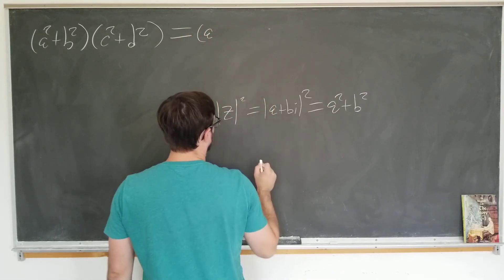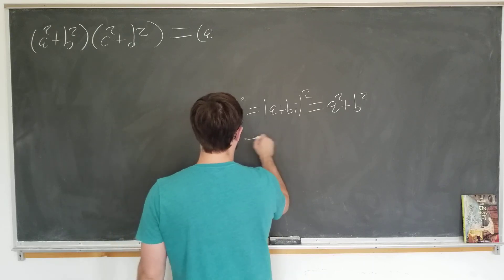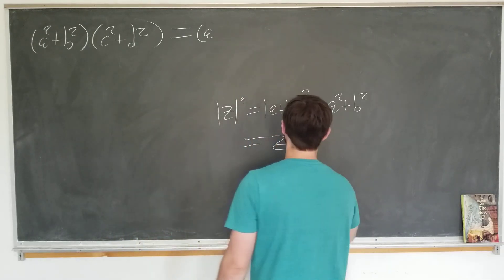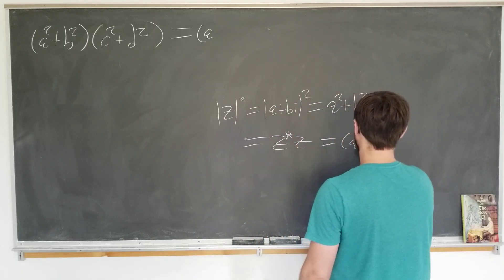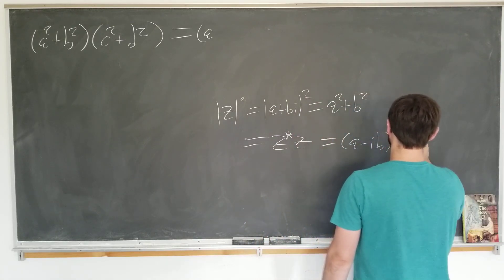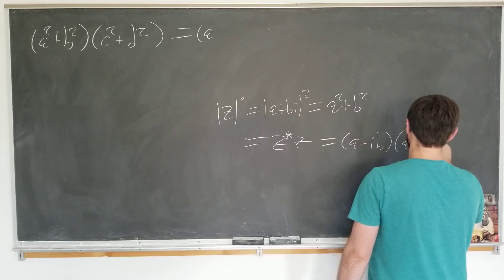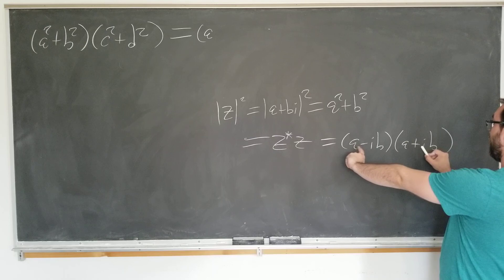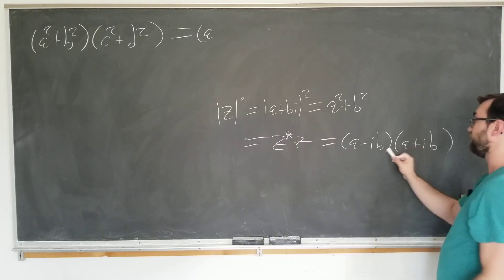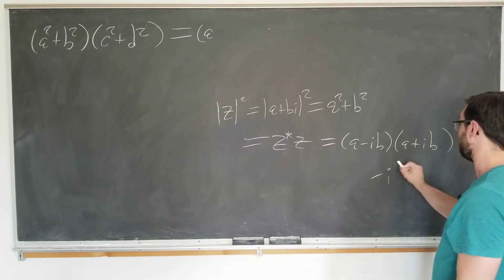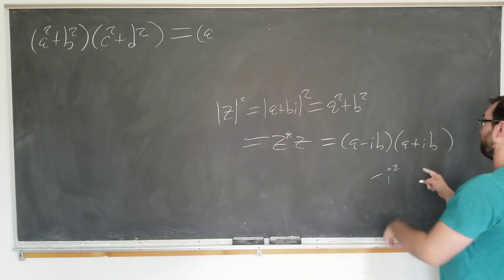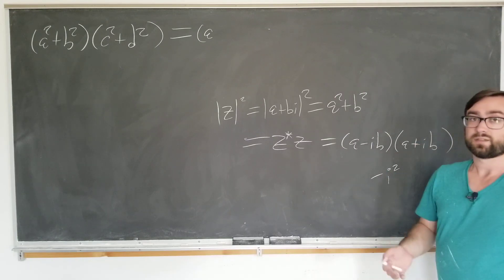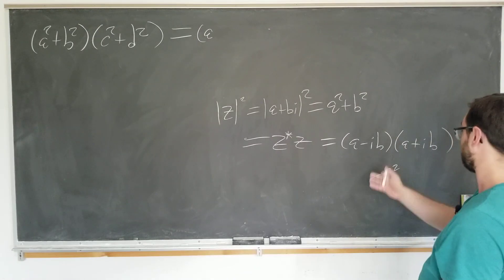So we can see right off the bat that if we want to, we can recognize these two products as simply the magnitude of a complex number. So let's go ahead and do that for both of these here. We're going to use the following form. It's going to be equal to z star z or a minus ib, a plus ib.